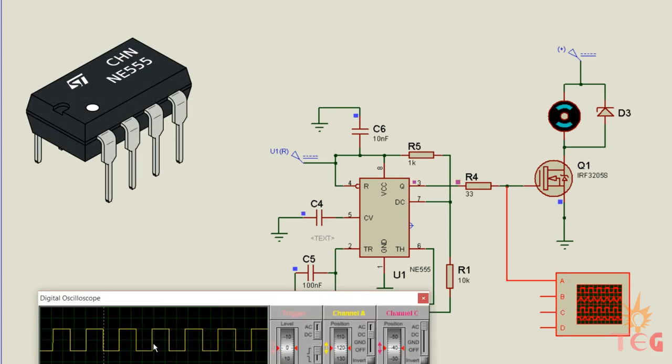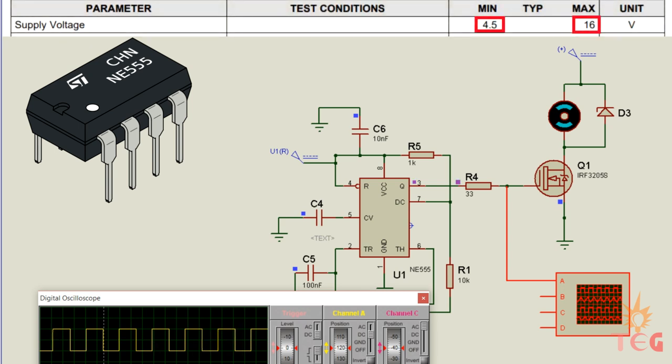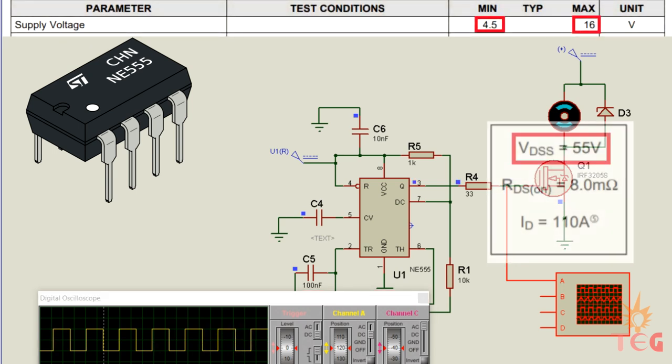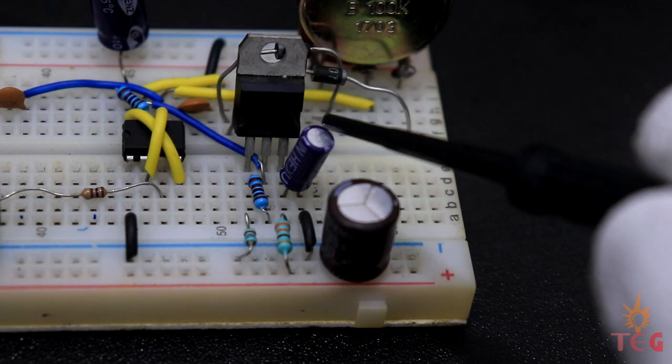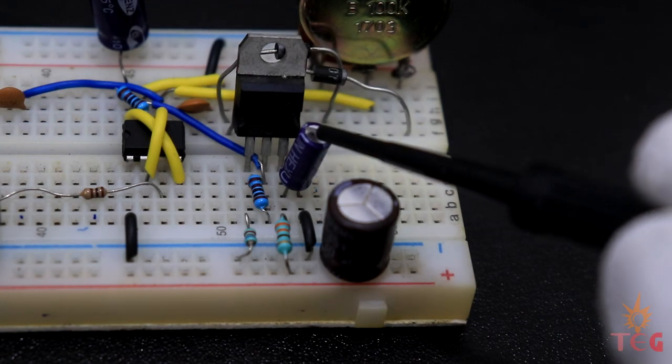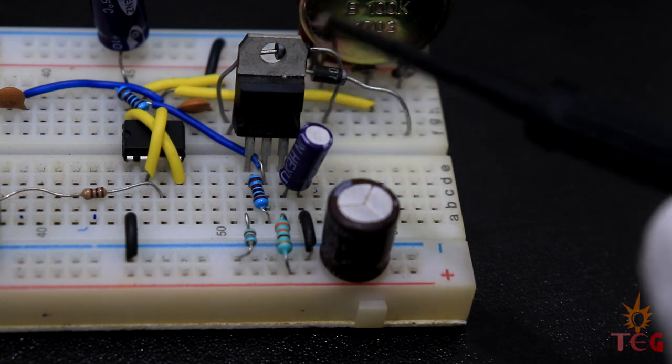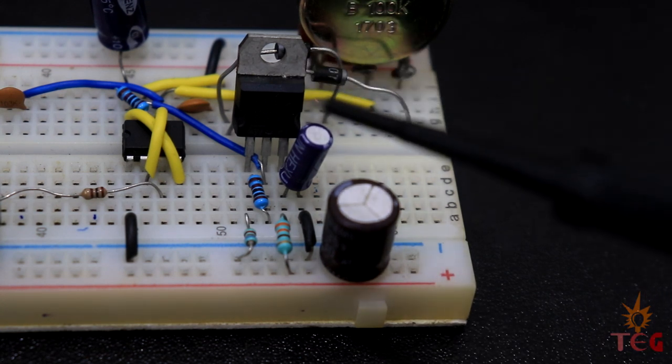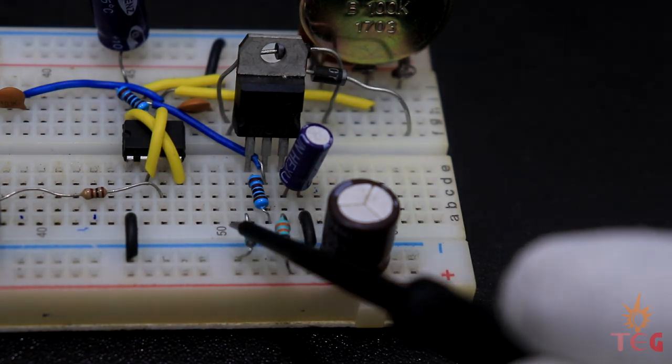Now there is a certain input voltage limit of the IC which is surely less than the voltage limit of the speed controller. Hence, to provide suitable working voltage to 555 timer IC, a voltage regulator circuit is used which provides fixed voltage to the IC.